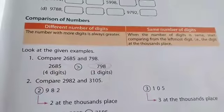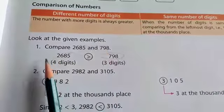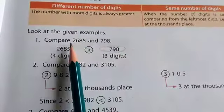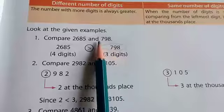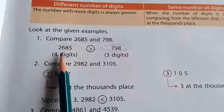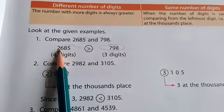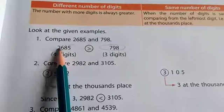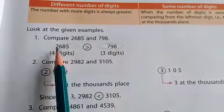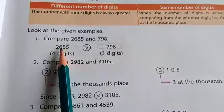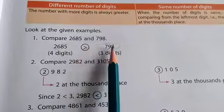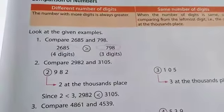Look at the given examples. Compare 2685 and 798. This is a four-digit number and this is a three-digit number. How are you going to compare? Which is greater? We look at the thousands place. The number with a thousands place is greater, because 2000 is greater than 700. So 2685 is the greater number. Always put the arrow mark towards the smaller number.